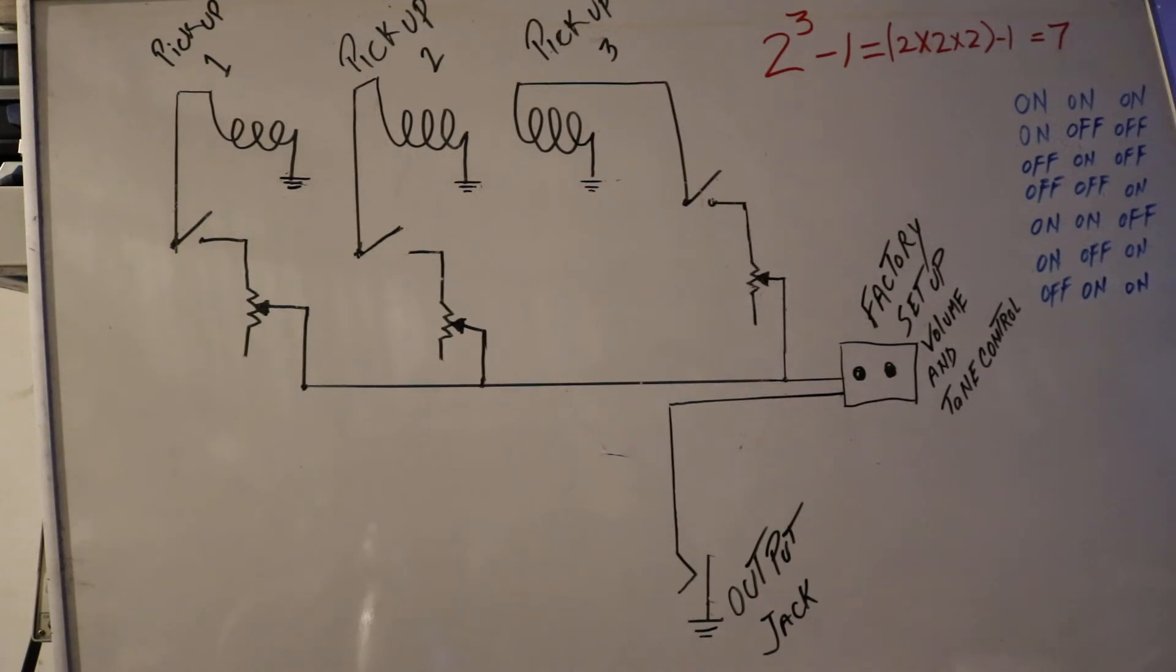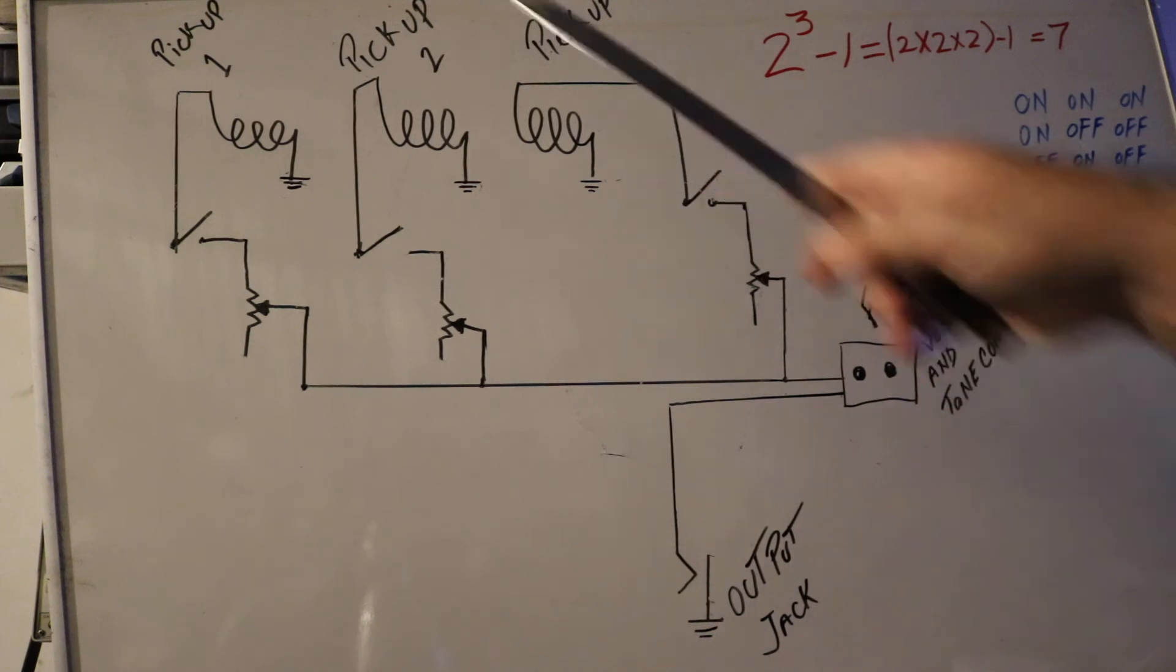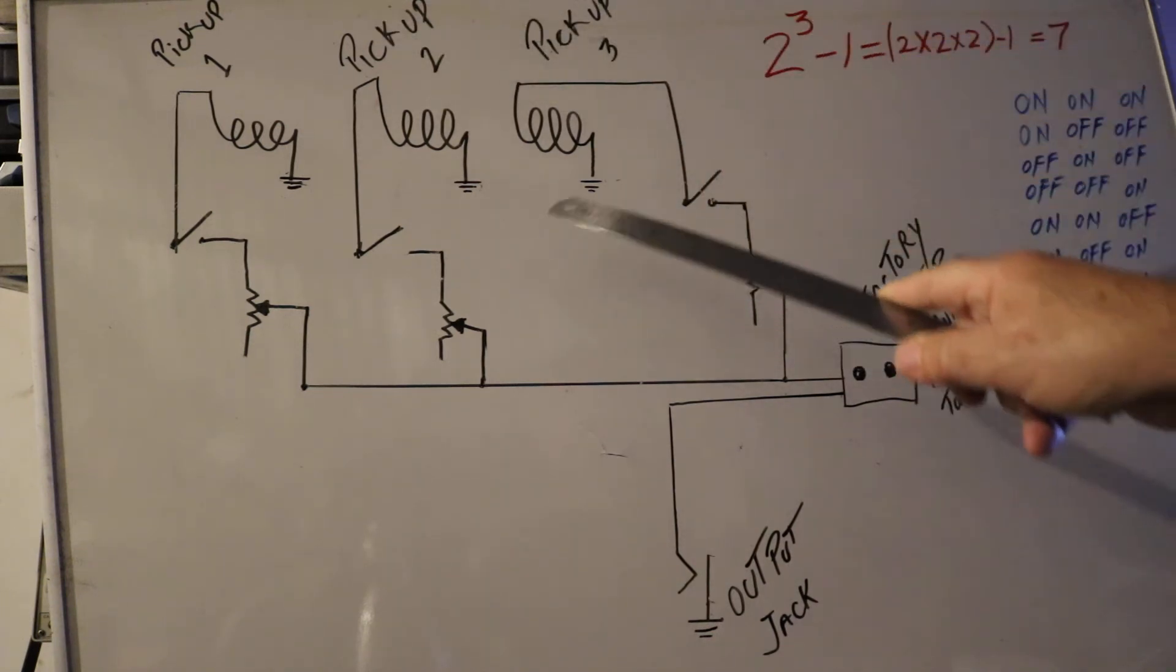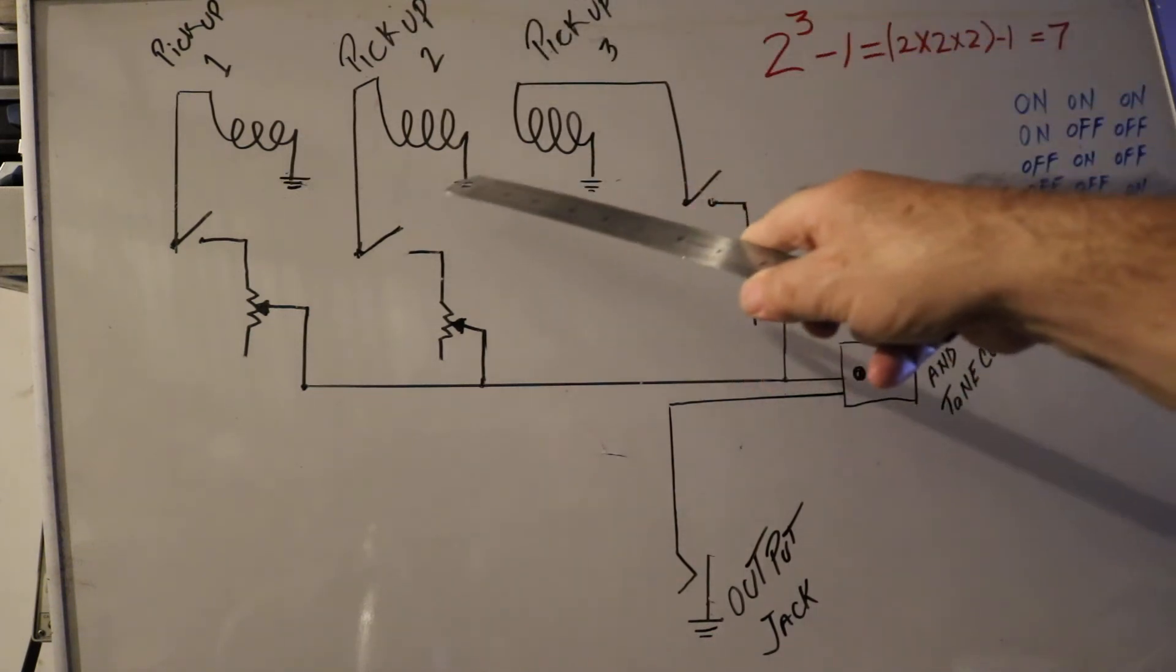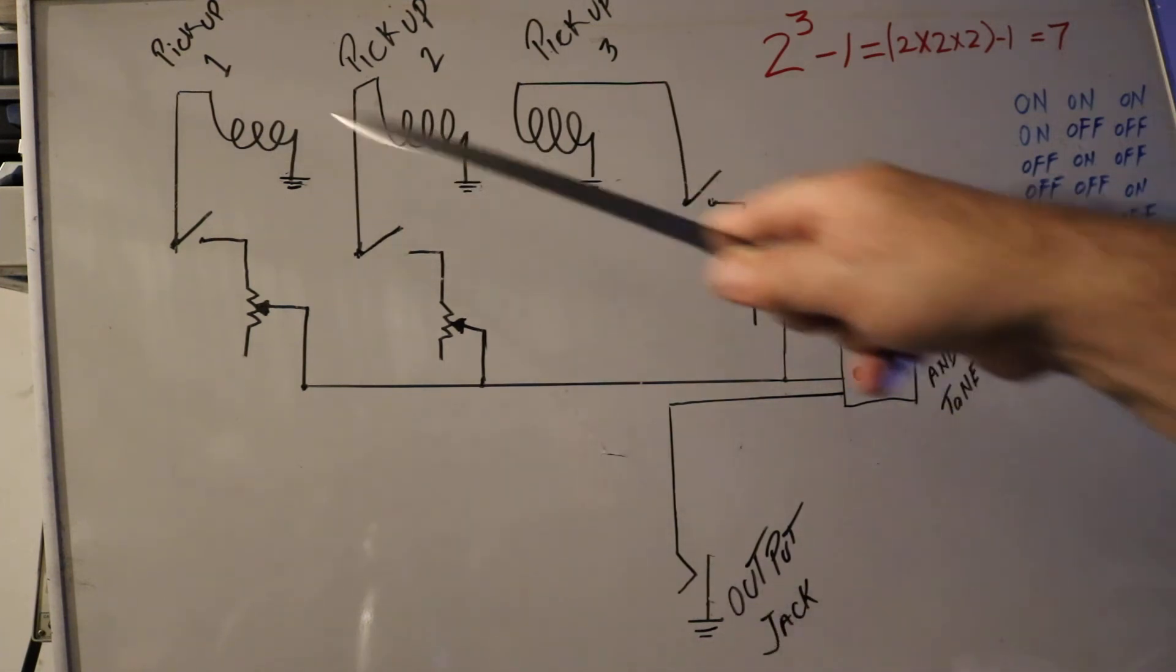Pickup one, pickup two, pickup three - each of them are connected directly to switches around here. One, two, three pickup, one, two, and three. One end of the pickup is connected to the ground, which in return the output jack is connected to the ground.